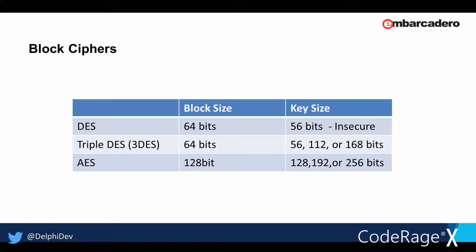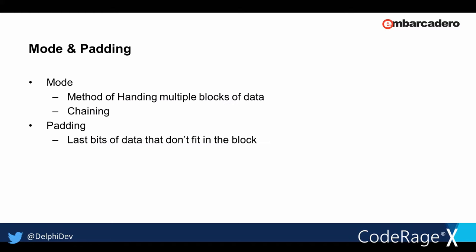We have a problem: we have lots of data to encrypt that's much larger than one block. So we have something called mode and padding. Mode is the method for handling multiple blocks of data — also called chaining — which allows us to combine all those blocks together into a single encrypted result. Padding deals with the fact that we work with a fixed block size and your data won't always fit that block size exactly — it handles the last bits of data that don't fit the block.